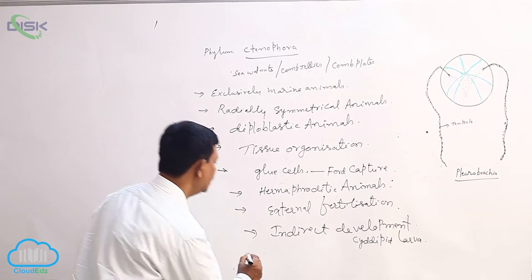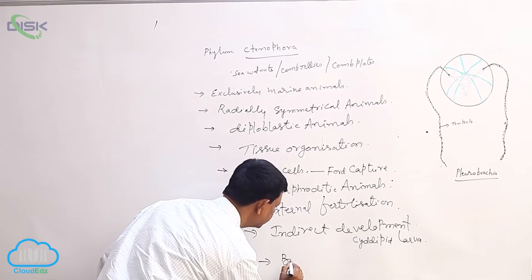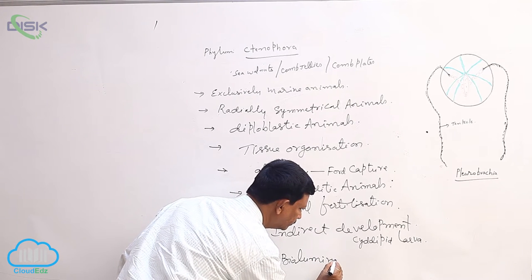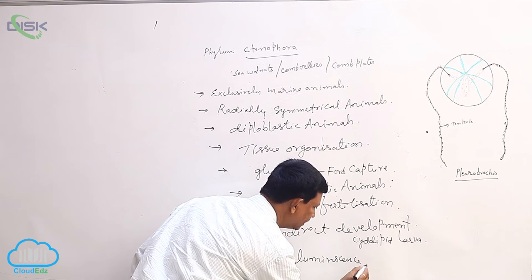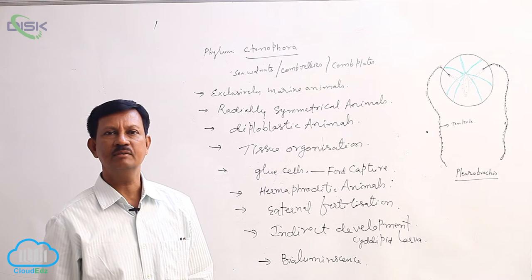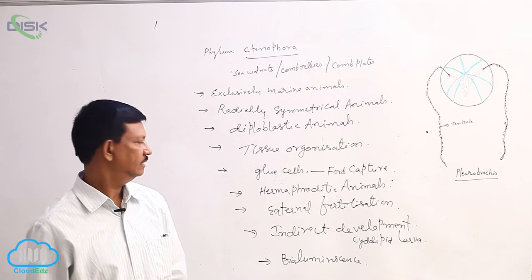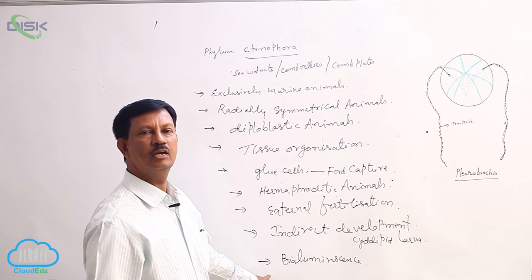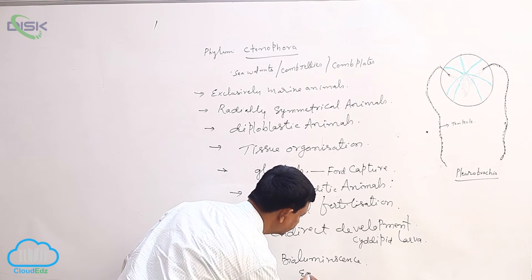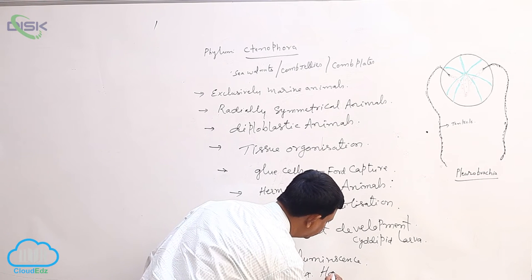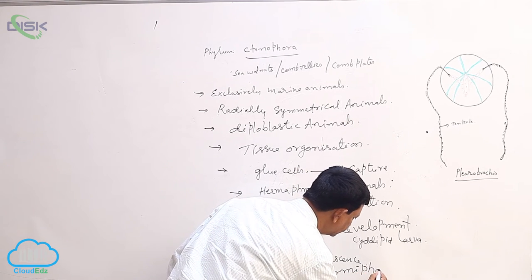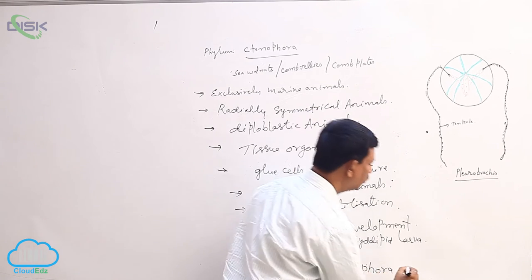They show bioluminescence. Bioluminescence means living organisms emitting light — that process is known as bioluminescence. Examples are Mnemiopsis and Pleurobrachia.